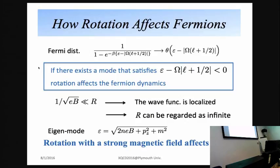Consider a huge magnetic field compared with the scale of the system size. In this case, the wave function of fermions is quite localized — r is finite but can be regarded as infinitely large, so we realize Landau quantization and obtain a zero mode. This dispersion has a Landau zero mode, meaning epsilon can be zero. In this sense, rotation together with a large magnetic field always affects the system.